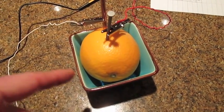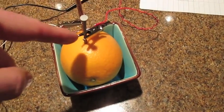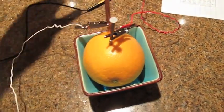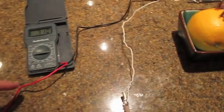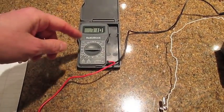And so those 2 electrons then flow up through the nail, through the wire, and they actually go through the multimeter.